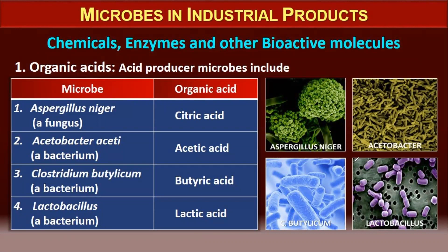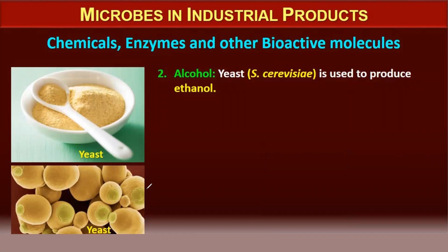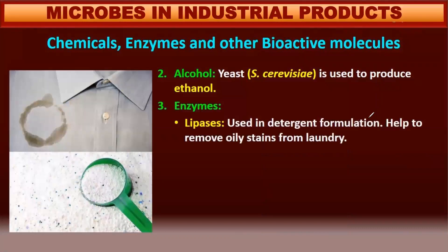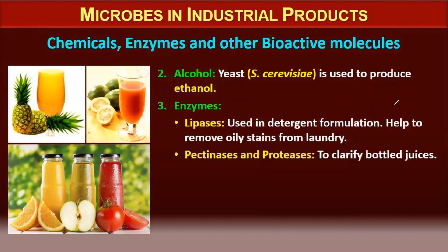Chemicals, enzymes, and other bioactive molecules produced industrially using microbes include: citric acid by Aspergillus niger (a fungus); acetic acid by Acetobacter aceti (a bacterium); butyric acid by Clostridium butylicum; lactic acid by Lactobacillus; and alcohol produced by Saccharomyces cerevisiae. Enzymes include lipases, used in detergent formulation to remove oil stains from laundry, and pectinase and protease to clarify bottled juice.